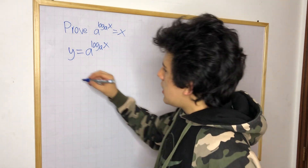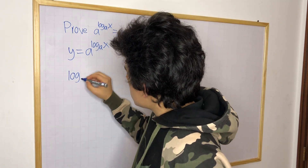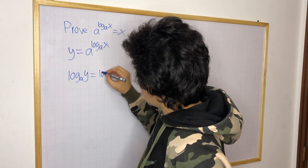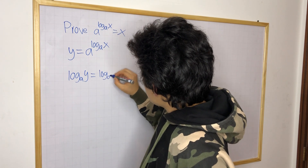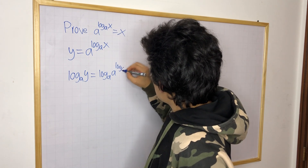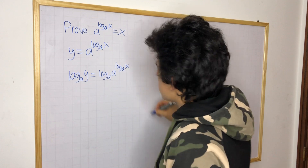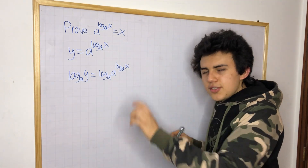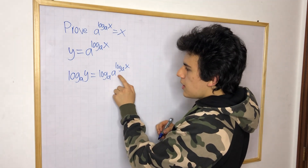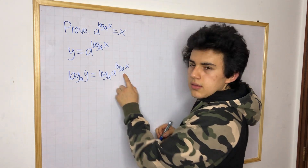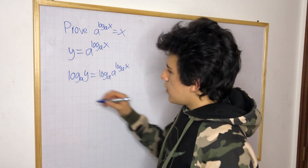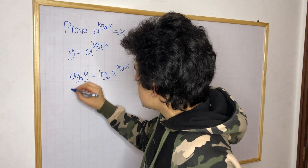Now I'm going to take log a on both sides. Log base a of y is equal to log base a of a to the log base a of x. Now we know that since we have a to the exponent, we can move this power to the front. That is a property of logarithms.